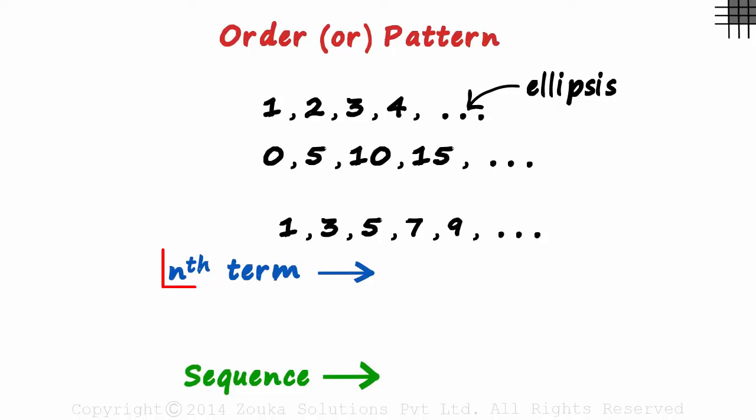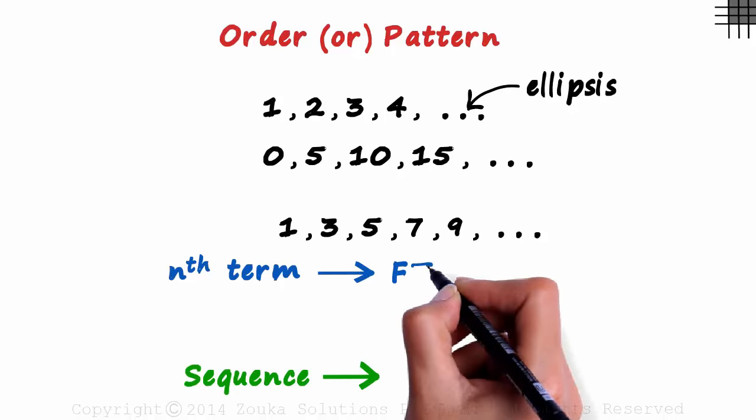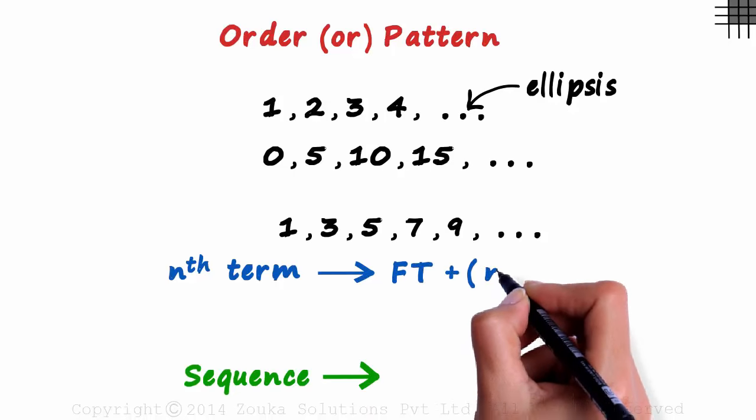What do I mean when I say the nth term? Say I ask you the 31st term of the sequence. You have no time to write all the 31 terms to find that out. We need to have a formula. And yes, we have one. It is the first term plus n minus 1 times d.